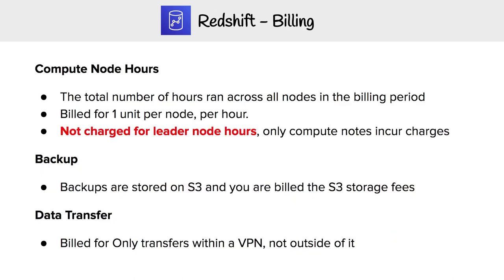For Redshift billing, you are charged compute node hours — the total number of hours run across all nodes in the billing period — billed at one unit per node per hour. You are not charged for the leader node. Backups are stored on S3 and you are billed the standard S3 storage fees. Data transfer is billed only for transfers within a VPC, not outside of it.